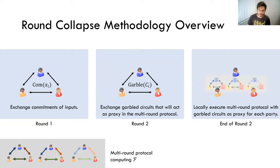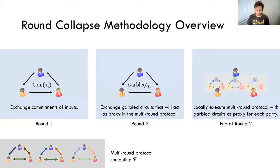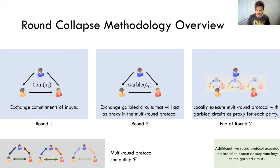At the end of the second round, all parties aggregate the circuits that have been broadcast and the commitments. They then set up these circuits as if they were the parties themselves and locally execute the multi-round protocol, sending messages between the circuits. So these garbled circuits act as the proxy for the parties themselves. Even though this local exchange of messages can be multiple rounds, this is entirely local and all the interaction has been done in advance. To get the keys to execute the garbled circuits, you actually run a two-round protocol in parallel with these two rounds to obtain the appropriate labels for the garbled circuits.